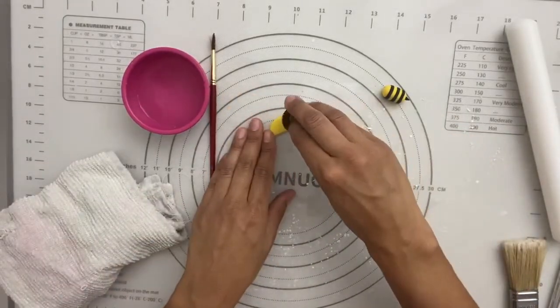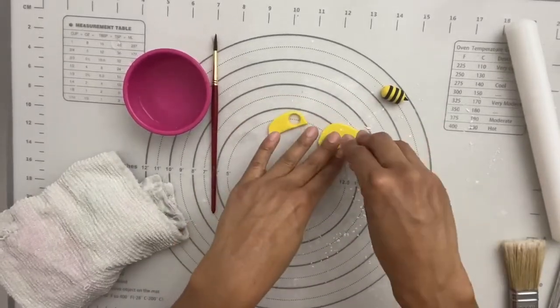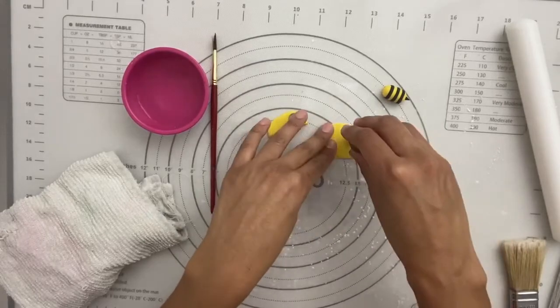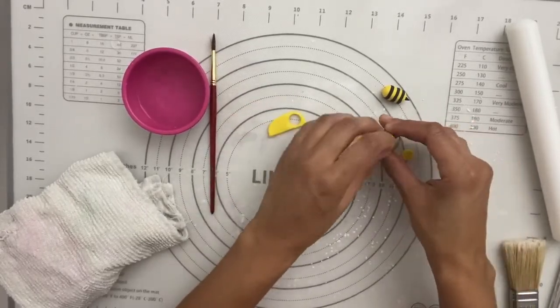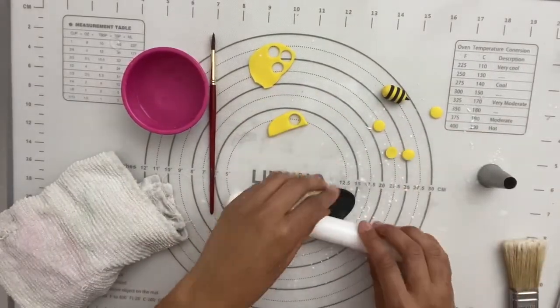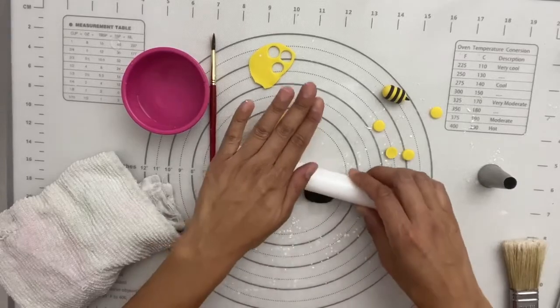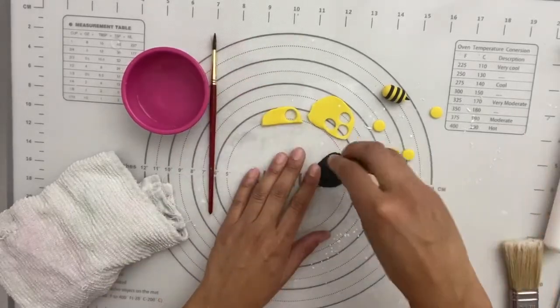I'm going to use my piping tip to cut one of the thicker one and three of the thinner. Then I'm going to take a little bit of this black fondant and I'm going to roll it to the same about of the thinner yellow. And I'm going to need three of those.